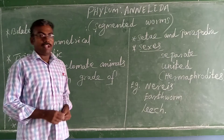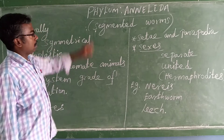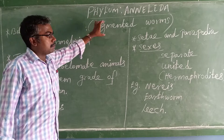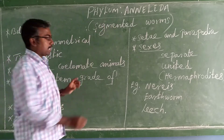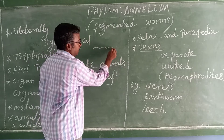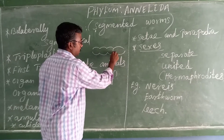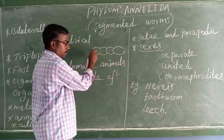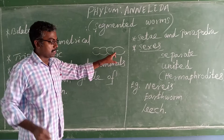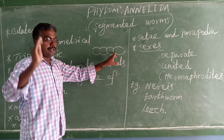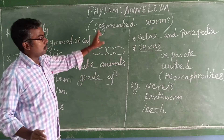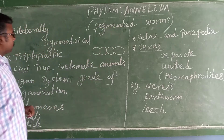Good morning students. Today we are going to see about Phylum Annelida. The common name is segmental worms. What is a segment? Consider an earthworm — it has segments 1, 2, 3, 4. Even though when we look normally we can't see this kind of segment, but when we do a cross-section we can see this kind of segment. So today we are going to see about segmental worms.